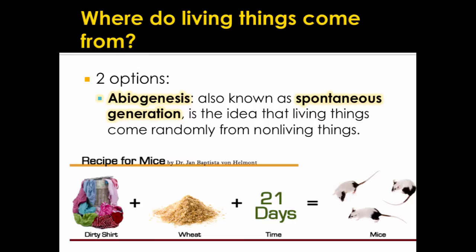Scientists want to look at where living things came from. There are two options. The first option is abiogenesis, which is also known as spontaneous generation. It's the idea that living things come about randomly from non-living things. Bio means alive, abio means not alive. Whenever you put 'a' in front of something, it means not. Genesis means to make.